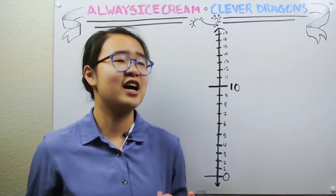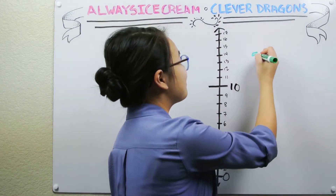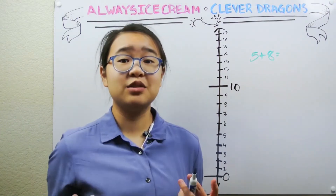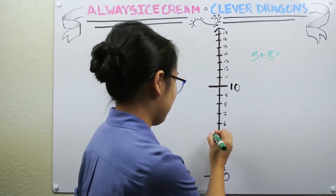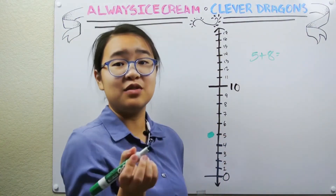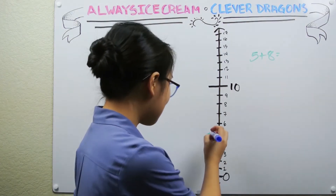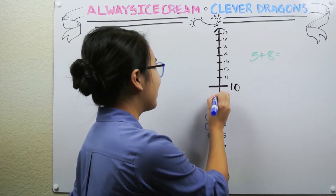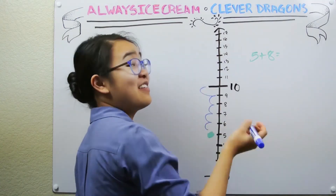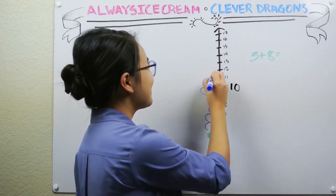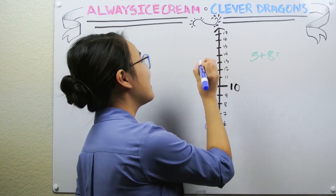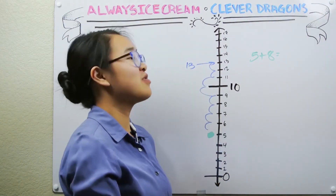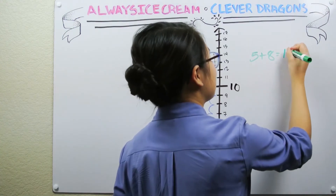Let's try this with some bigger numbers, such as five plus eight. To do this with a number line, we would start at five and then move up eight steps: one, two, three, four, five takes us to ten, six, seven, eight. And as you can see, we end at thirteen, which means five plus eight is equal to thirteen.